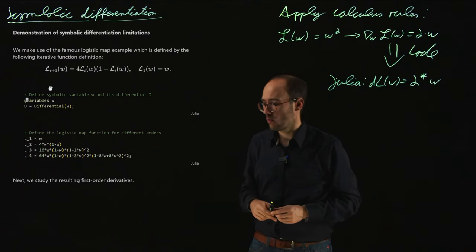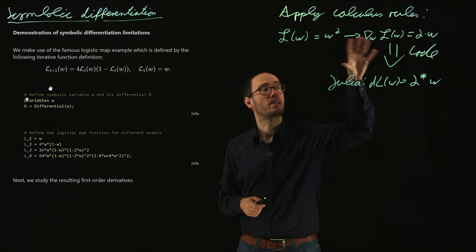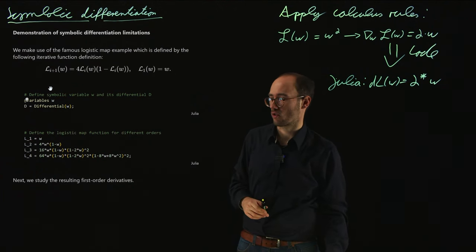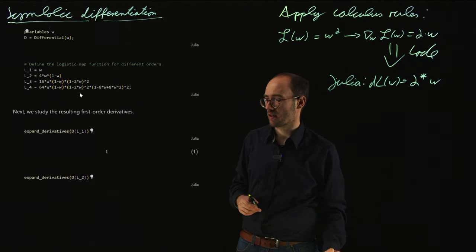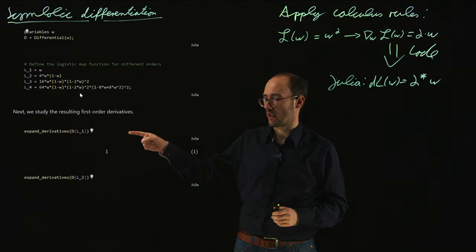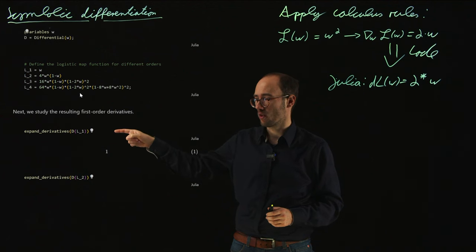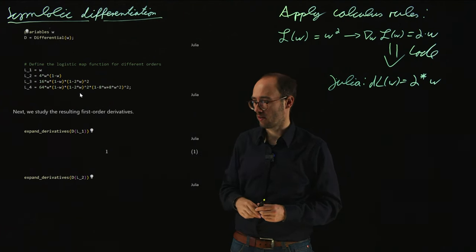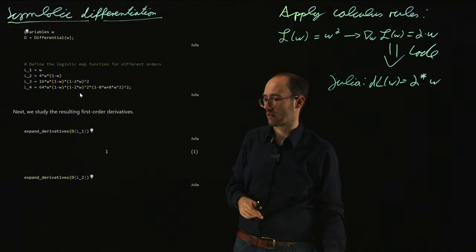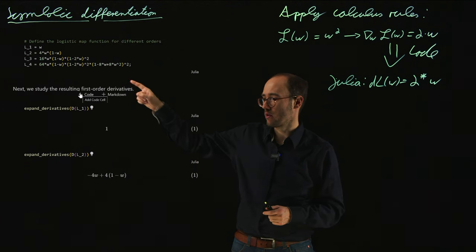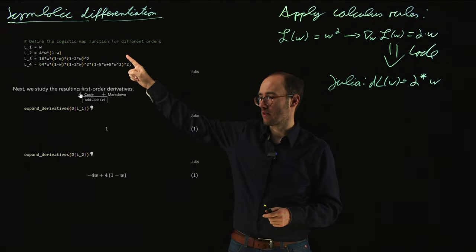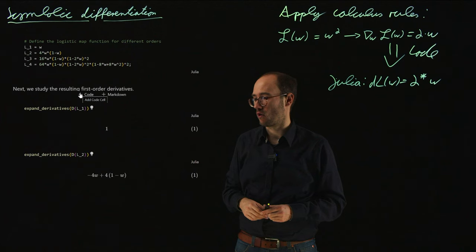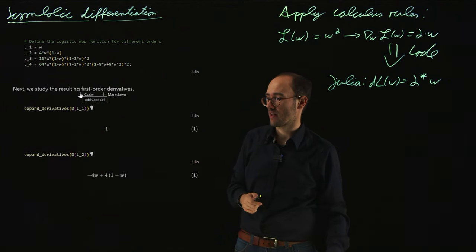And what I want to do now is apply the calculus rules using the differential operator with the Symbolics.jl toolbox. And if we do so, the nice thing is that this works quite well. So if we calculate the derivative dL1, so we calculate the derivative of w with respect to w, that is obviously 1. Or if we take the derivative of our L2, which would be 4w(1-w), we obviously get -4w + 4 - 1w and so on. So that is quite nice.